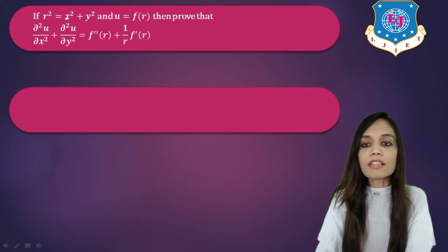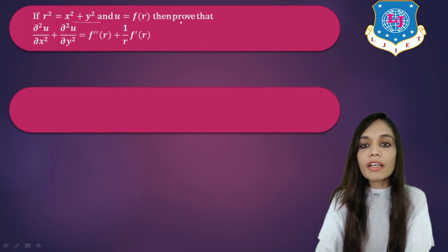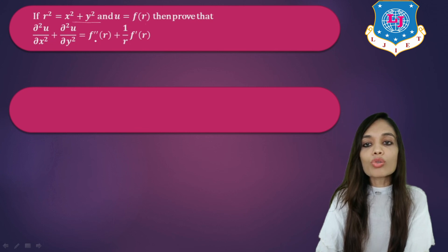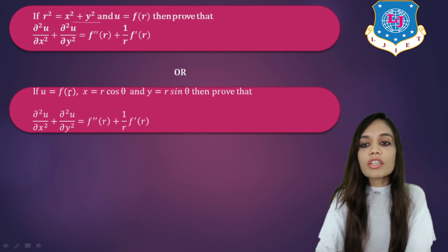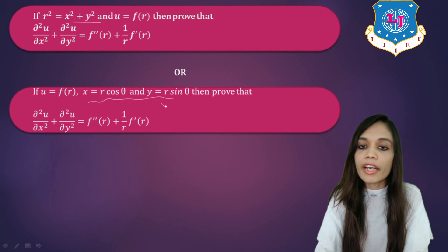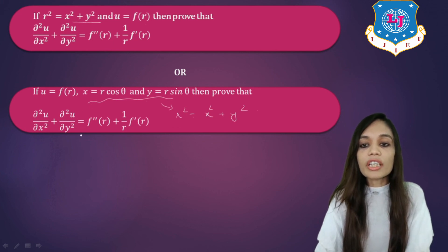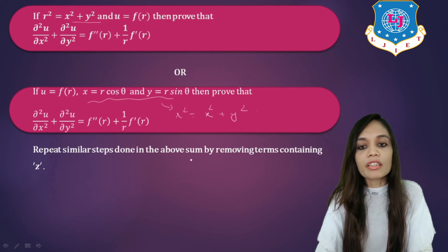Let us see one more example. If r square is equal to x square plus y square, with only two variables, and u is equal to f of r, then we have to prove that del square u upon del x square plus del square u upon del y square is equal to f double dash of r plus 1 upon r into f dash of r. This can also be stated using x equals r cos theta and y equals r sin theta. To solve, simply repeat the similar steps done in the above sum by removing terms containing z. I hope you understood all three important sums of chain rule. Thank you for watching.